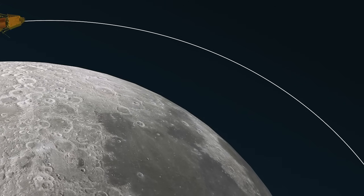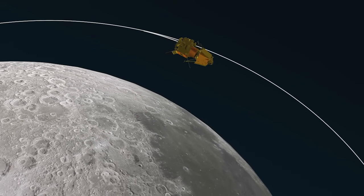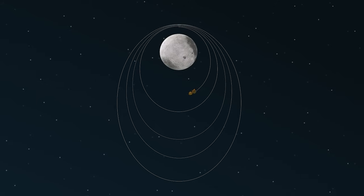This time, the orbit is decreased gradually by firing rockets in the opposite direction. Again, we repeat this process 5 times until the orbit is close enough to the moon.